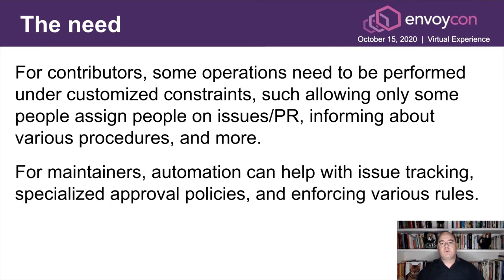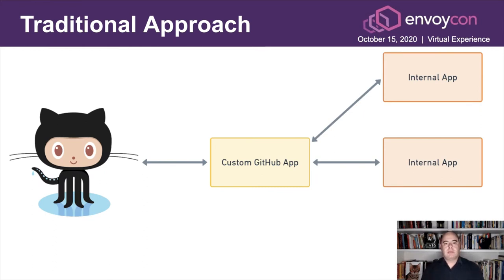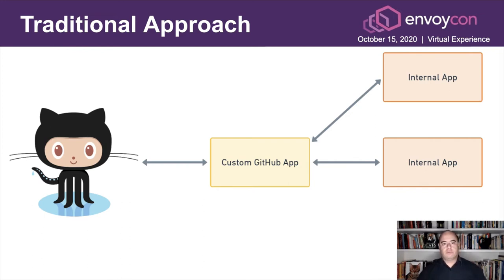For maintainers, automation can help with issue tracking, specialized approval policies, and enforcing various rules, which can be done using some kind of scripting. When approaching this, I've seen in the past in big companies like Lyft and Twitter, when interacting with some kind of source control repository, they build some kind of custom GitHub app or other app that consumes events from GitHub, and codifies the required behavior that are enforced and supported inside the company in code in this app. And it's usually not really reusable, and a lot of content also ends up as crud and bitrot, which causes a lot of pain when the company grows.